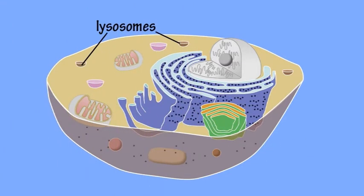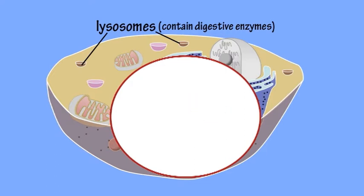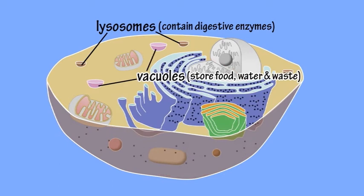Lysosomes are single membrane organelles produced by the activities of the ribosomes and Golgi apparatus. They contain digestive enzymes that can be released to break down old or worn-out organelles. These enzymes can also be used to digest food stored in vacuoles, which are single membrane organelles used to store food, water or waste within the cell.